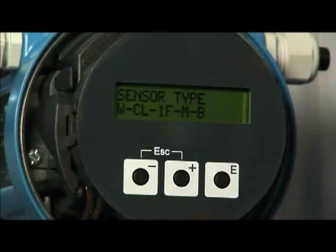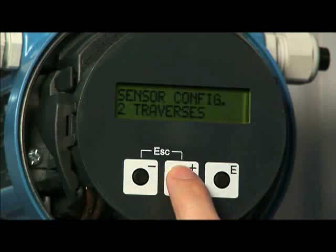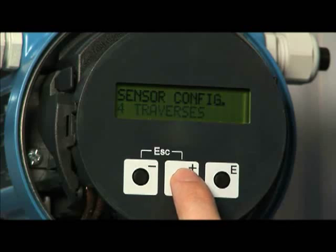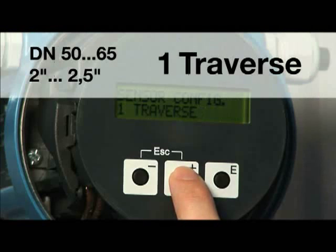The transmitter will prompt the number of traverses. The number of traverses determines if the sensors are to be mounted on opposite sides of the pipe, in a one traverse installation, or on the same side of the pipe, in a two traverse installation.